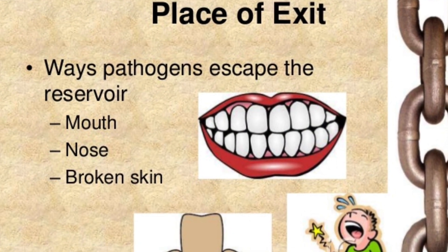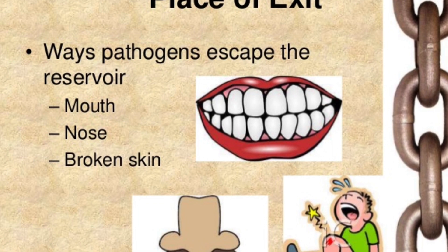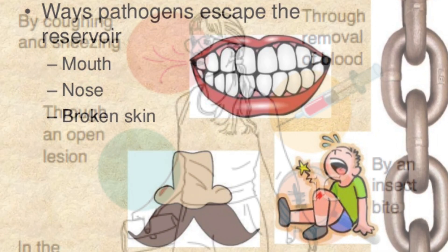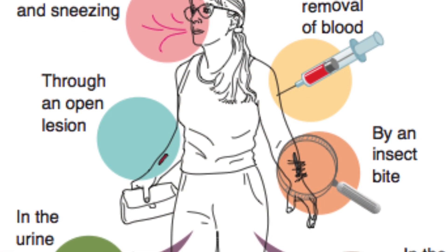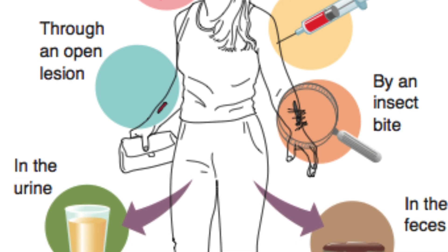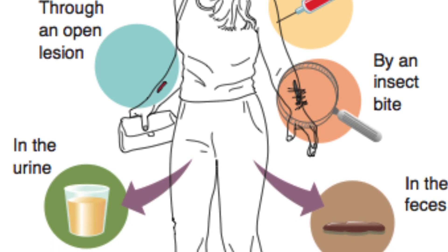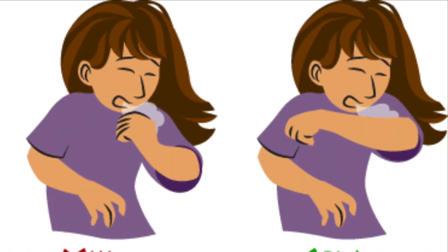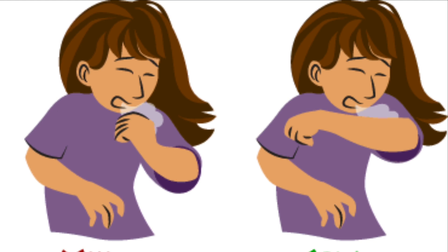Another link is the portal of exit. This is how pathogens leave the reservoir or the host. Examples include coughing or sneezing, open wounds, body fluids, touching, and saliva. We can break this chain by practicing cough etiquette — catch it, bin it, and kill it. Always cover your mouth with a tissue when coughing and wash your hands right after. Cough and sneeze into the fold of your arms, trapping germs within the easily washable fabric of your clothing.